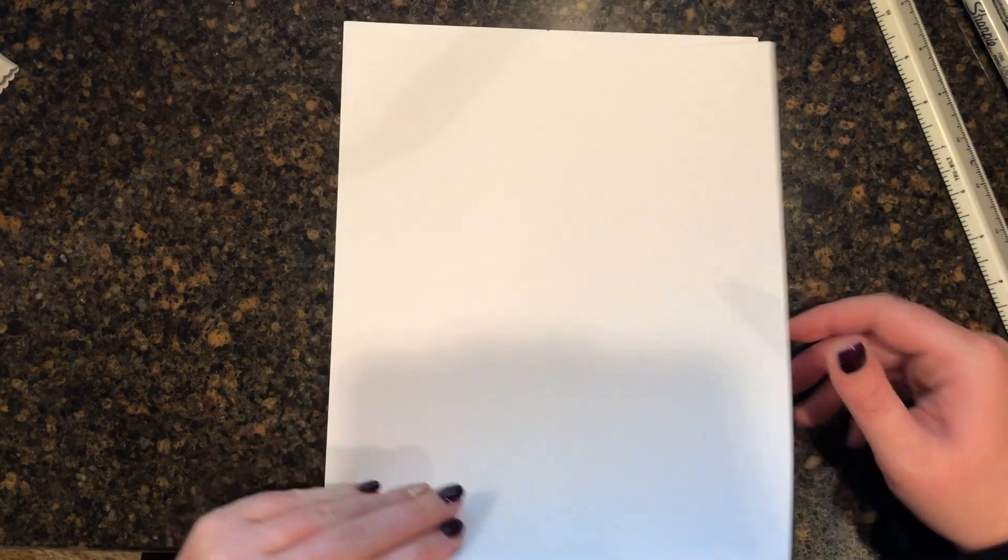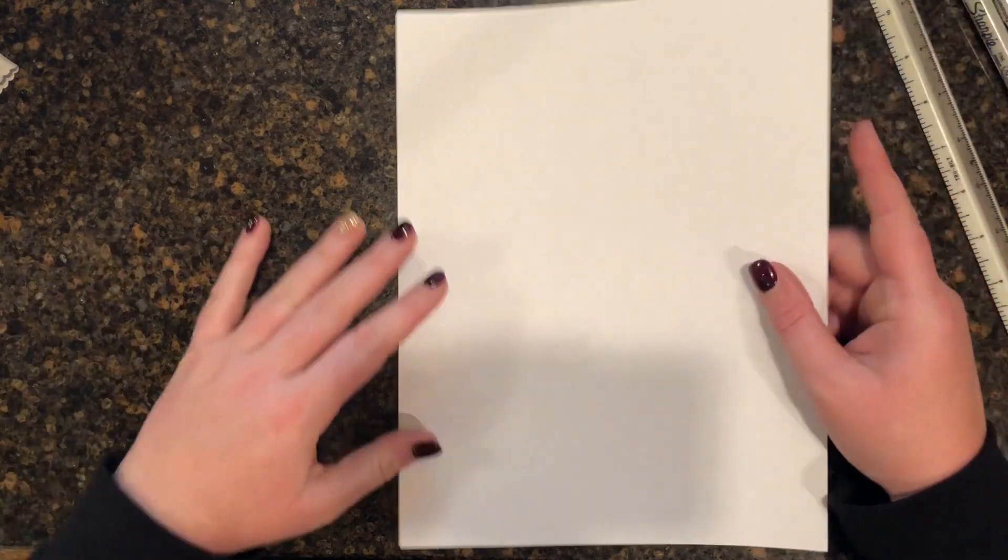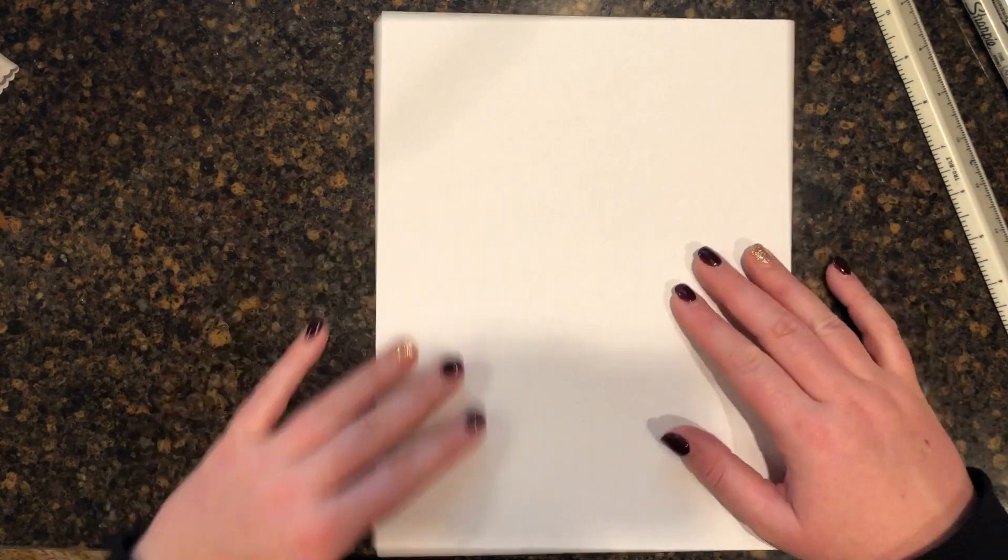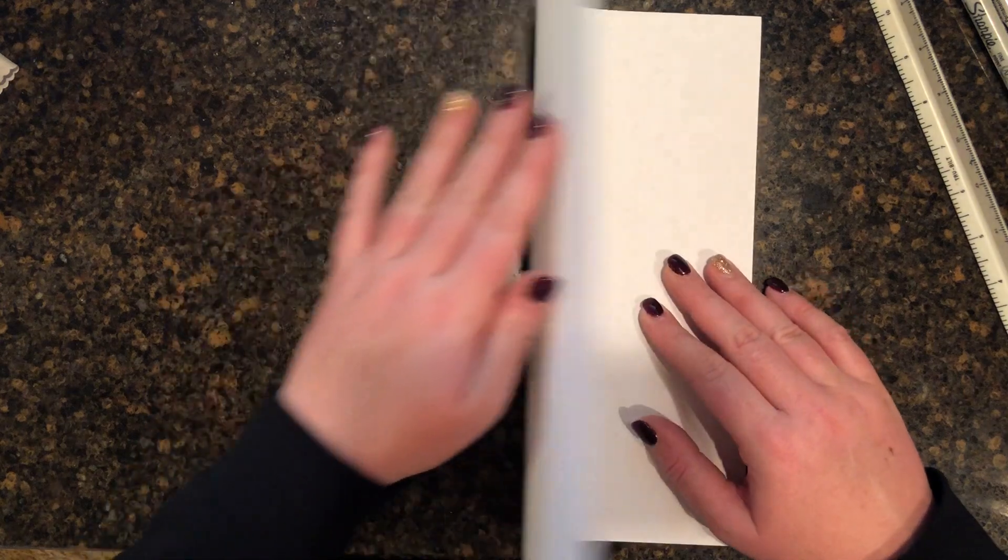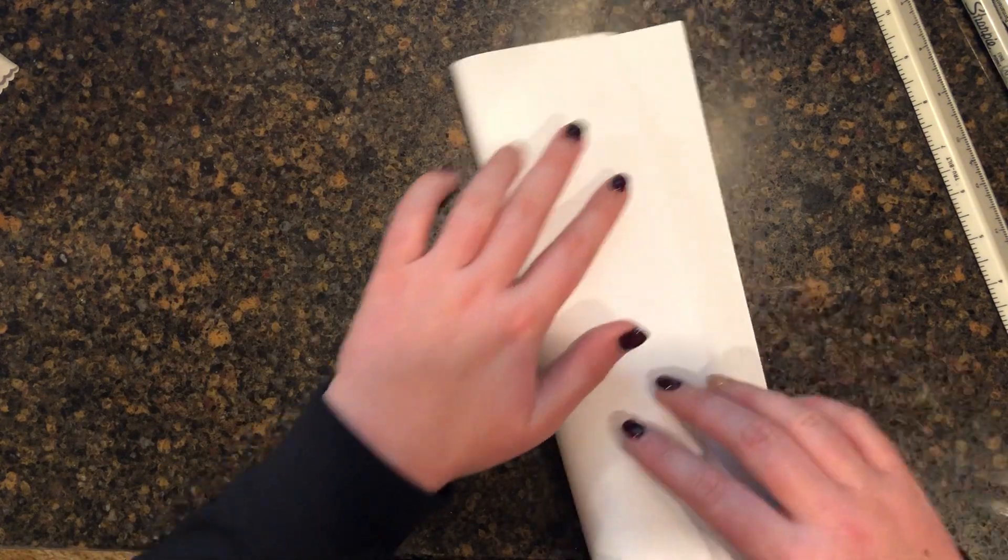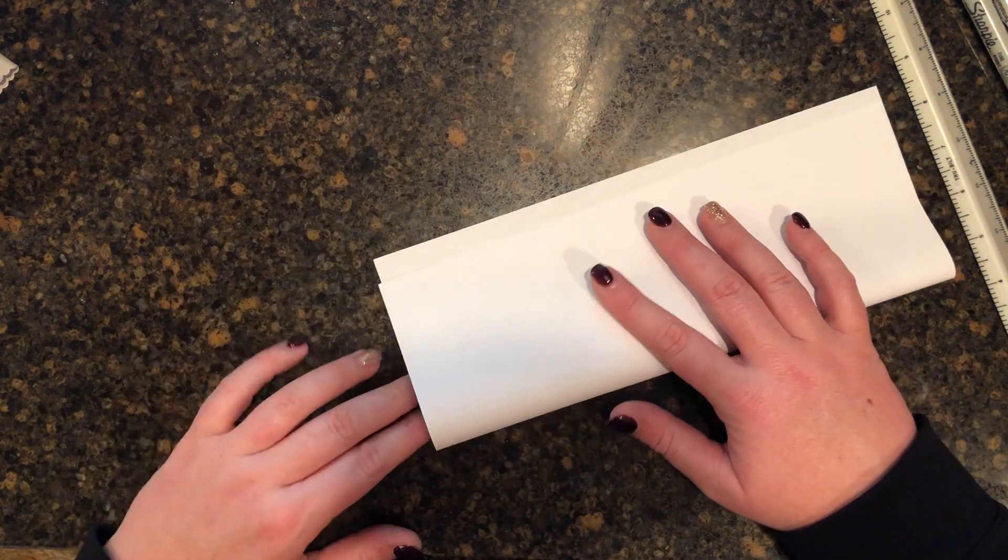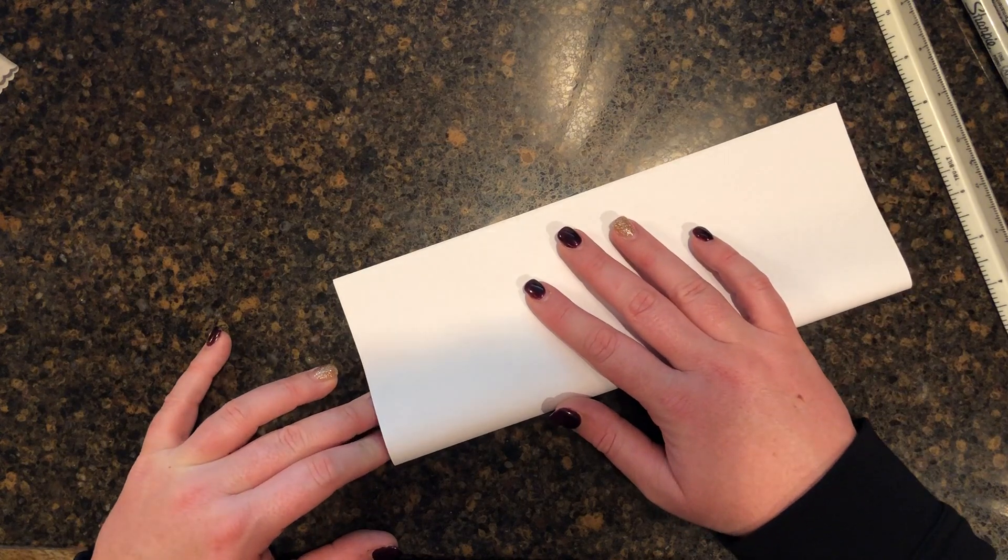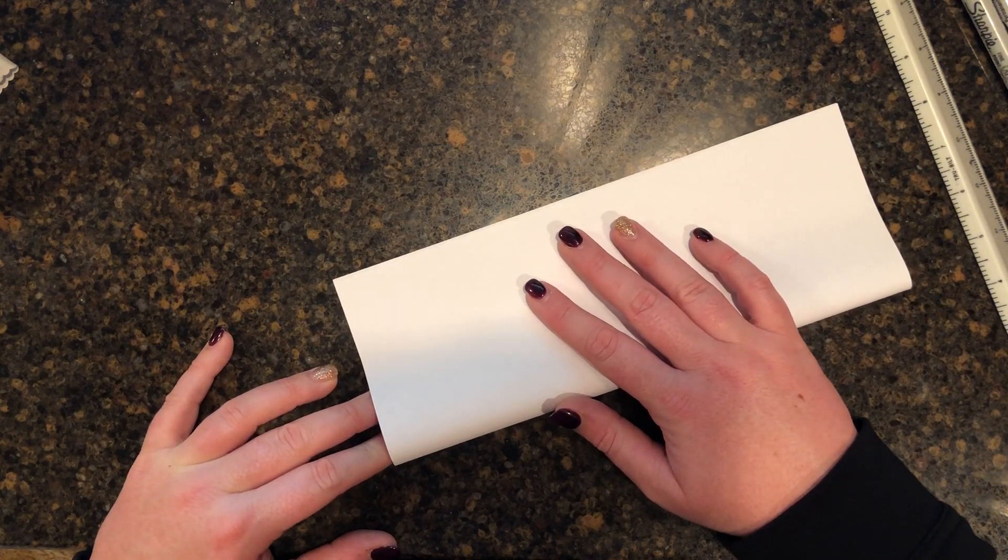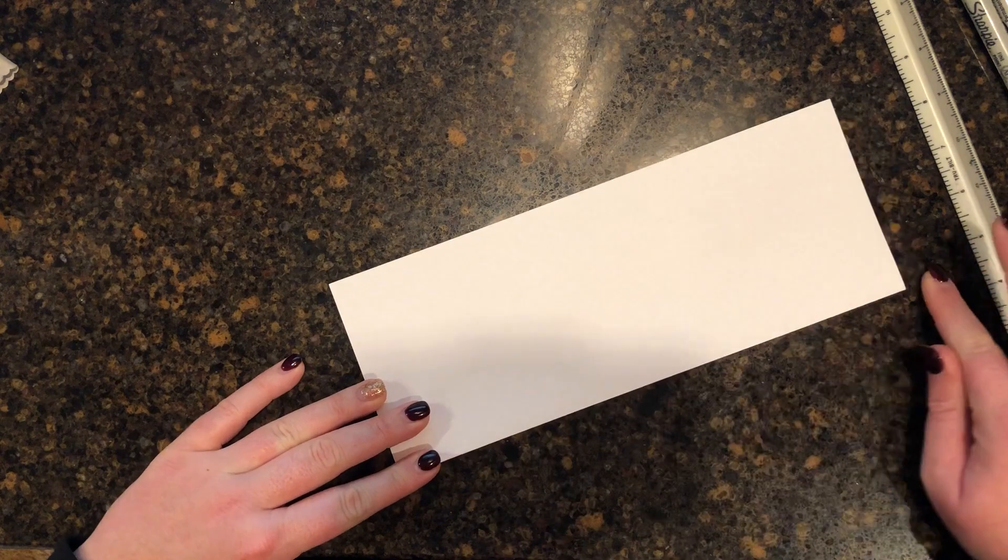Take your piece of paper that you're going to write your timeline on and you're gonna want to fold it hot dog style, right? So you're gonna go long edge to long edge. I'm just gonna rotate my paper here. To do that, just line up your edges so that everything's even and then just crease your paper.